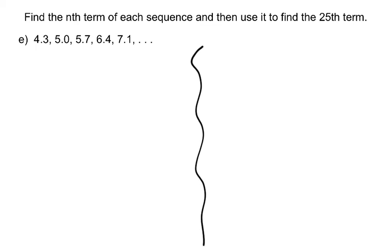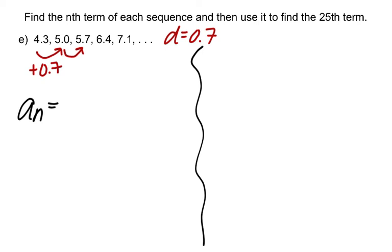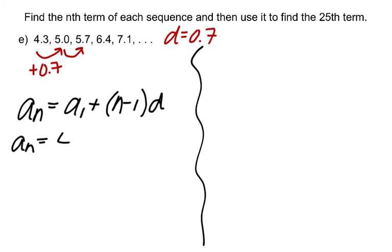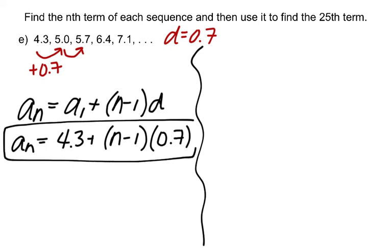Example e. What's the pattern? Going from 4.3 to 5 and from 5 to 5.7 — it looks like we're adding 0.7 repetitively. That's what makes the sequence arithmetic — we have a common difference of 0.7. To find the nth term using the formula, substitute in the first term 4.3 plus n minus 1 times d, where d is 0.7. This would be acceptable as your formula.